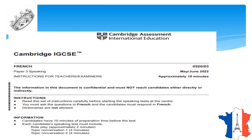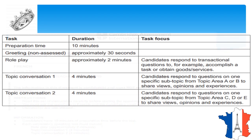Let's see some rules before we go to the Cambridge IGCSE speaking exam, paper 3 of 0520 French. Here are some basic instructions given to the candidate before the exam. The candidates have 10 minutes of preparation time before the test. The exam is divided into 3 parts: the role play, topic conversation 1, and topic conversation 2. The preparation time given is 10 minutes as you enter the exam hall, and the greeting is the non-assessed part.